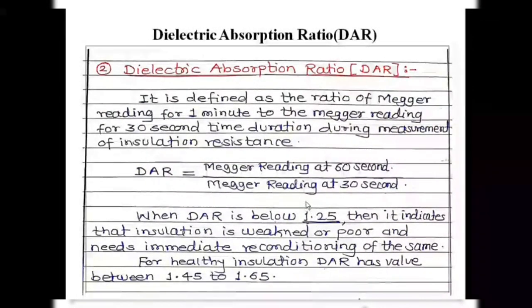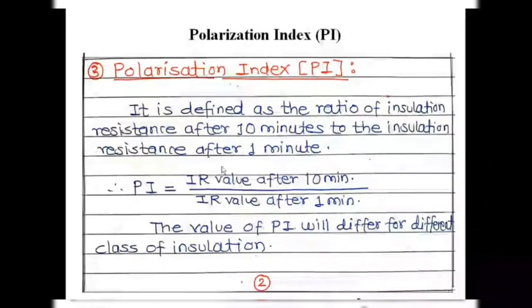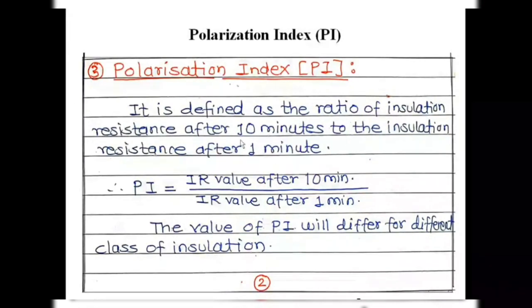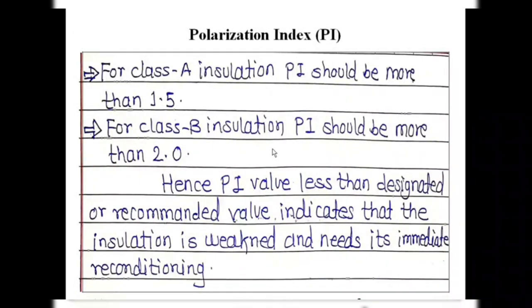The dielectric absorption ratio directly gives us the condition of insulation, and we can take appropriate action depending upon its value. The third method — the most popular method — is the polarization index (PI). It is defined as the ratio of insulation resistance after 10 minutes to insulation resistance after 1 minute. Mathematically, PI equals IR at 10 minutes divided by IR at 1 minute. We also need to take into account what class of insulation is being used.